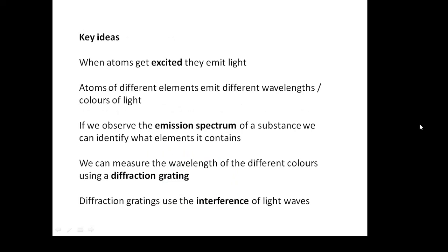These are the key ideas which you need to remember. When atoms get excited, they emit light. Atoms of different elements emit different wavelengths or colours of light. If we observe the emission spectrum of a substance, we can identify what elements it contains. We can measure the wavelength of the different colours using a diffraction grating. And diffraction gratings use interference. They rely on the interference of light waves.